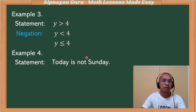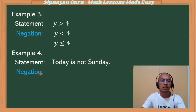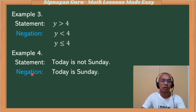Example: today is not Sunday. Since this statement is already stated in negative form, its negation, we will state the positive one. So: today is Sunday is our negation.